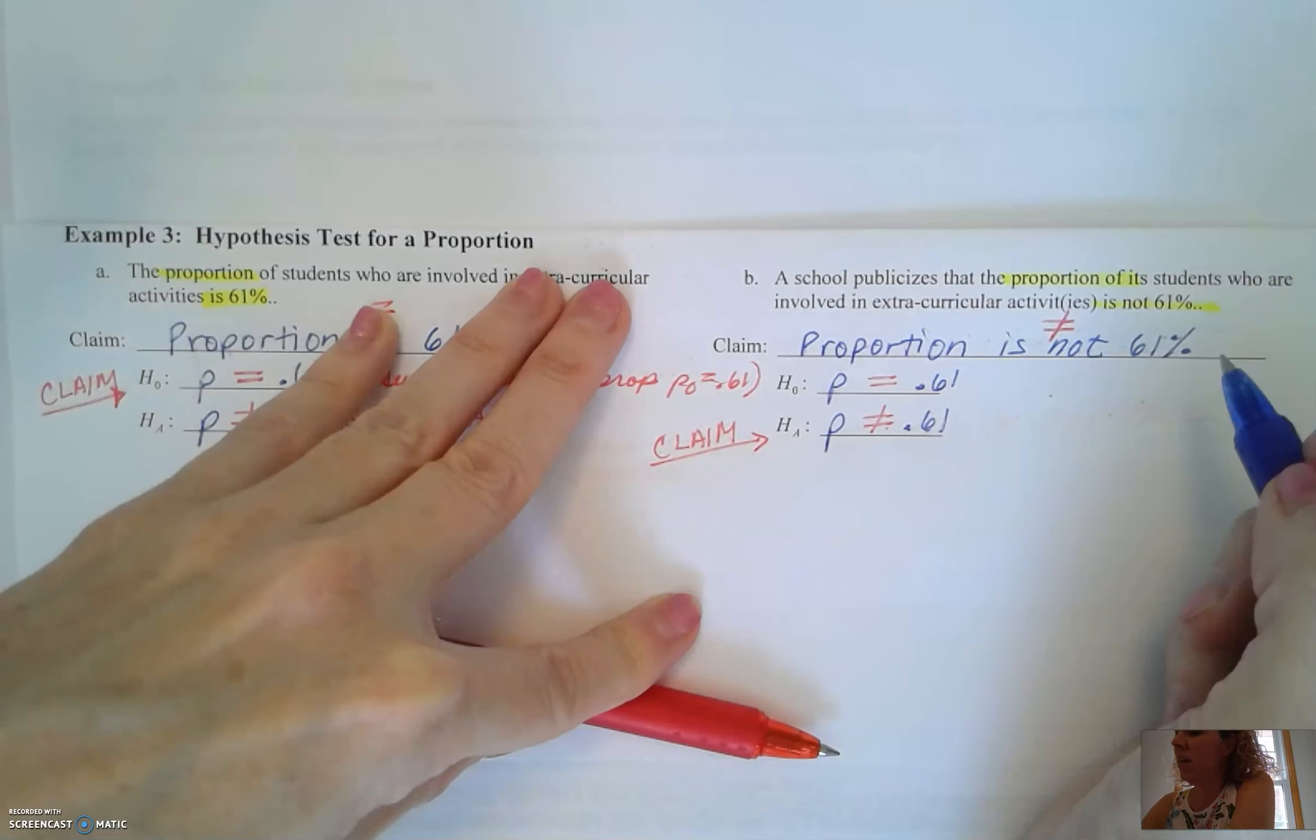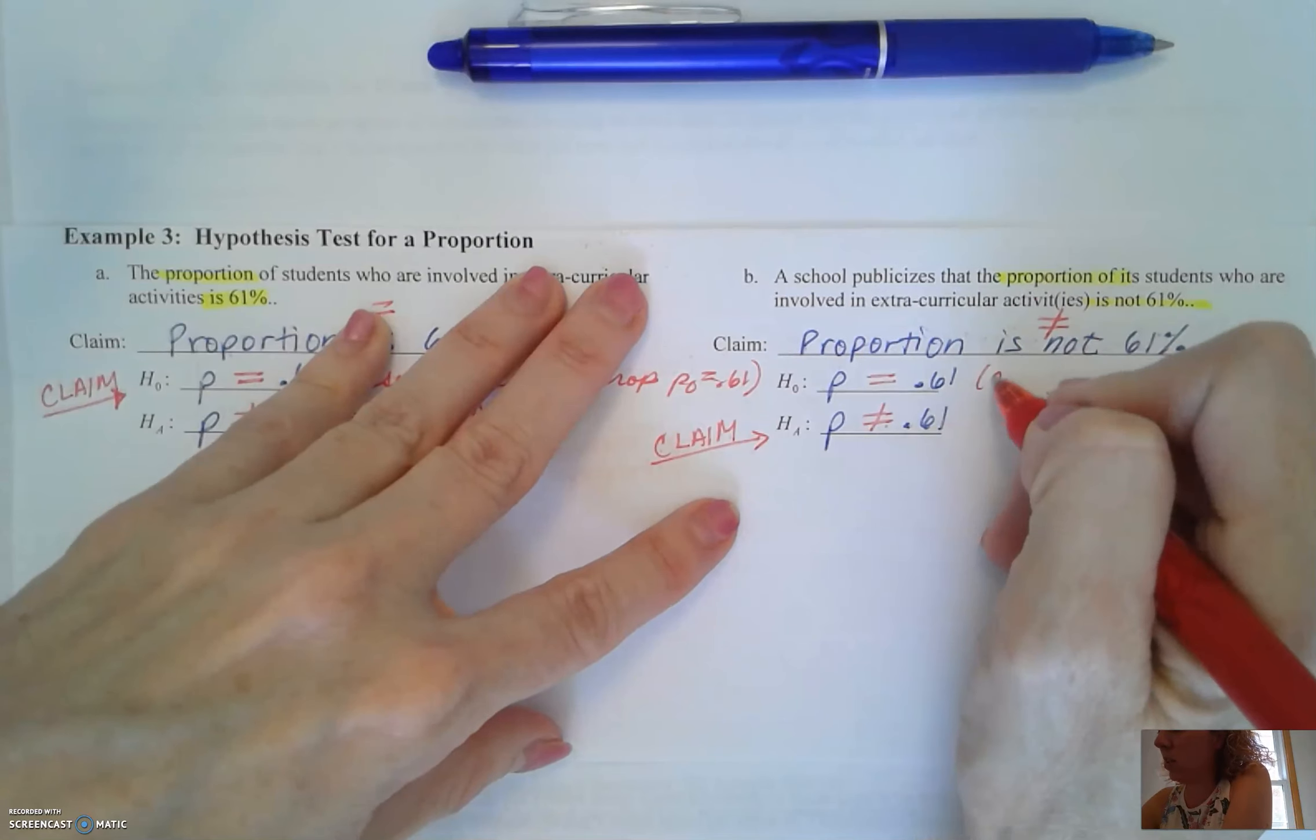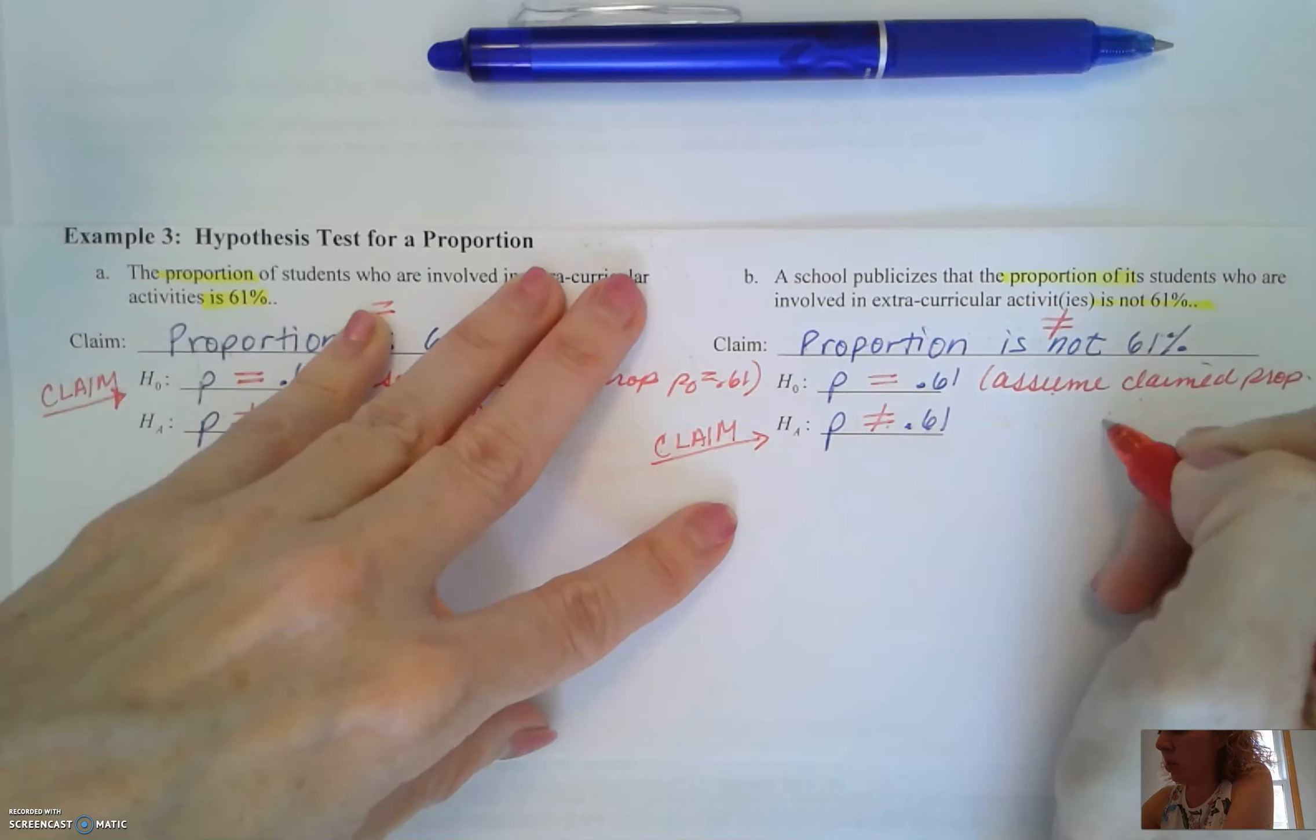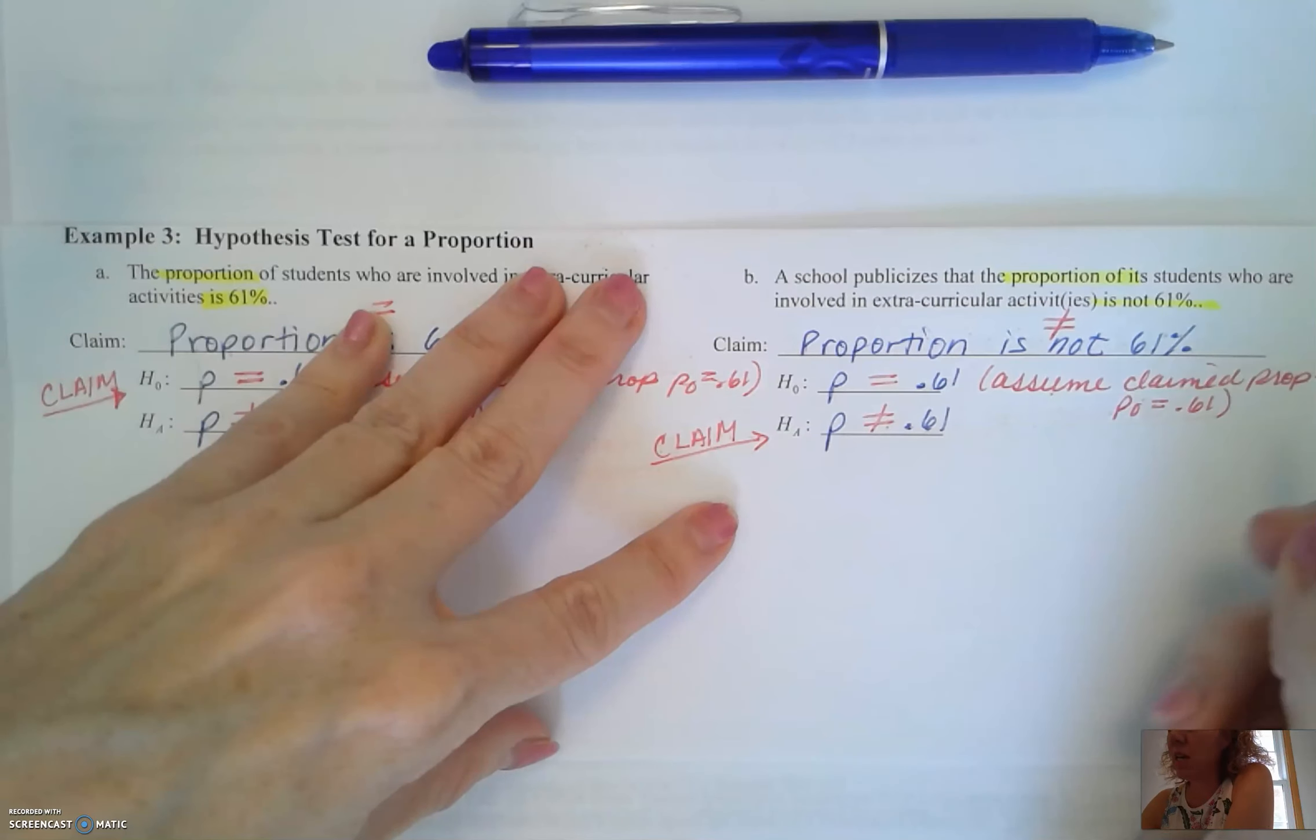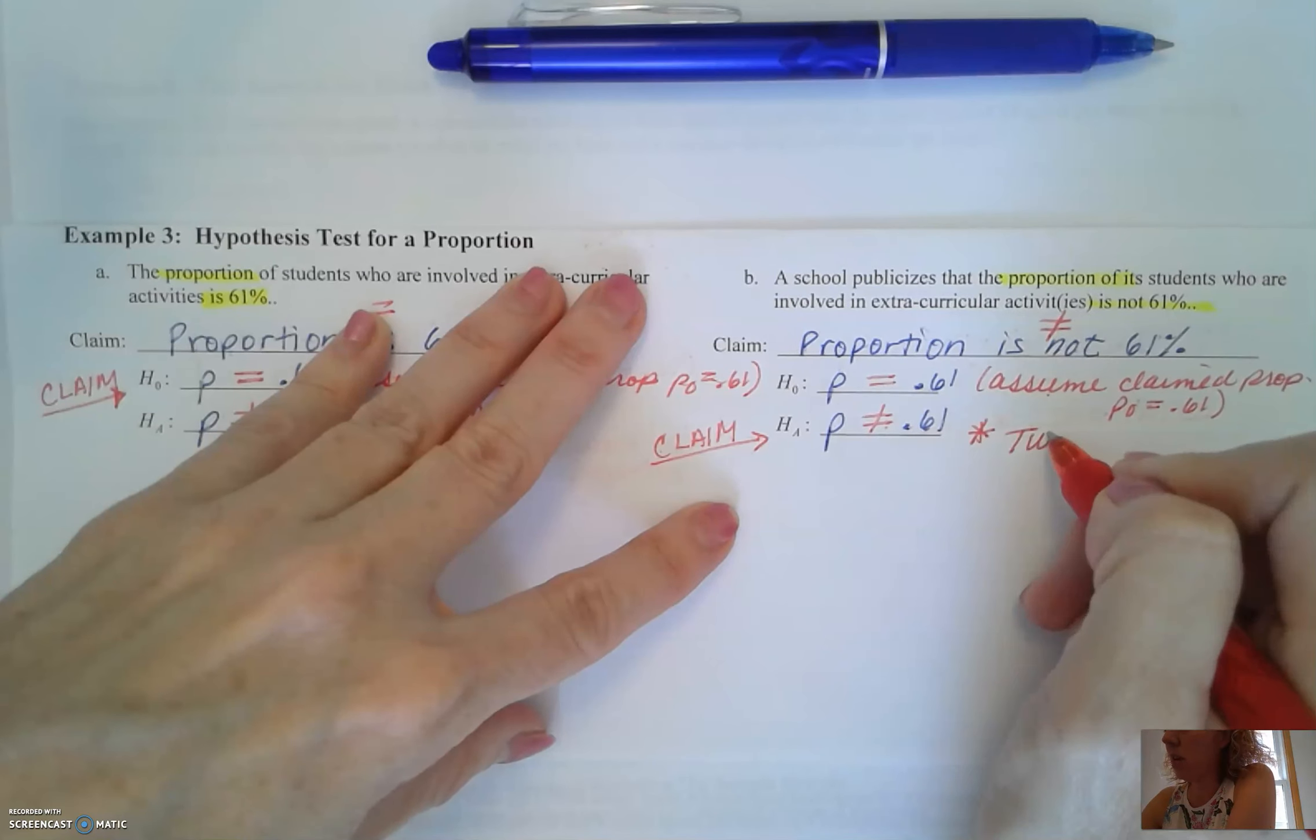Now also we can note here since our H sub 0 is our equality that means that's our underlying assumption. We're going to assume that the claimed proportion P sub 0 is equal to 0.61. We're going to use it again in our calculations and our alternative hypothesis since it's not equal to is also going to be a two tail test.